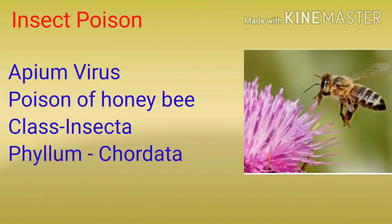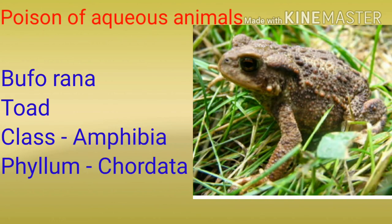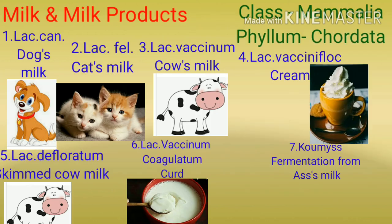In homeopathy, we are also preparing medicines from insect poison, like Apium virus, commonly called as poison of honeybee, class Insecta and phylum Arthropoda. We have also got medicine from poison of aqueous animal, like Bufo rana, commonly called toad, class Amphibia, phylum Chordata.